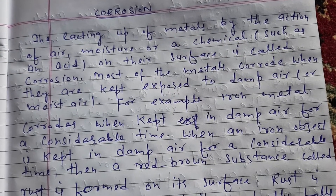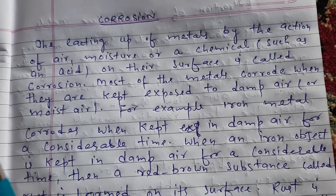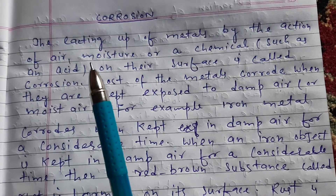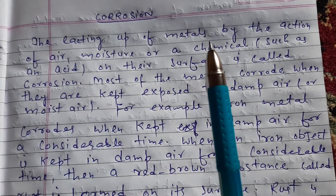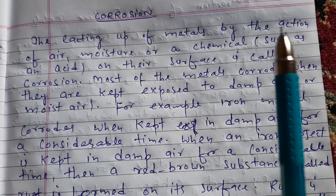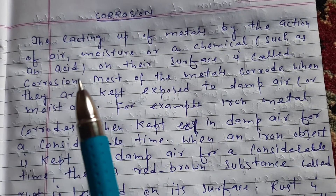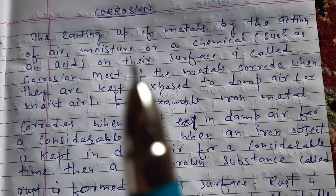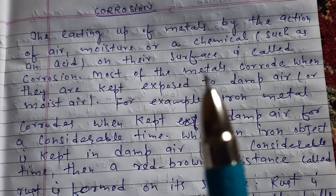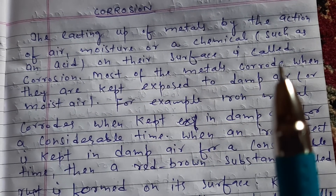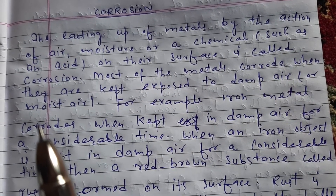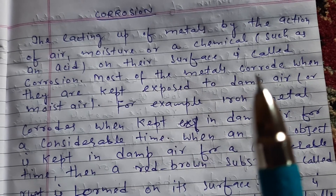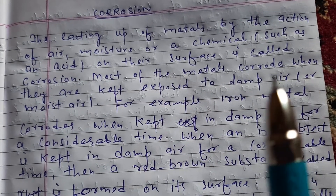Assalamu alaikum, dear students. Today our topic is corrosion. The eating of metals by the action of air, moisture, or a chemical such as an acid on their surface is called corrosion. Most of the metals corrode when they are kept exposed to damp air or moist air.